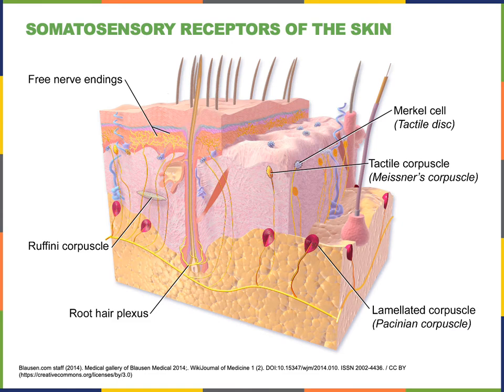The somatosensory receptors of the skin include numerous free nerve endings throughout the dermis and epidermis. These free nerve endings are involved in detecting multiple submodalities of somatosensation. There are nociceptors that detect stimuli associated with tissue damage and produce both the submodalities of pain and itch.